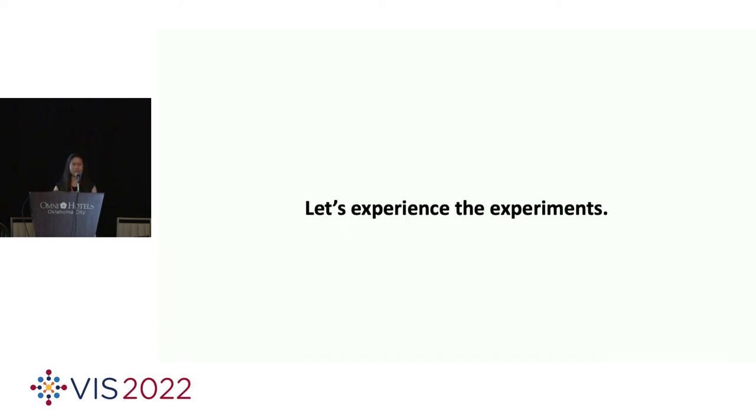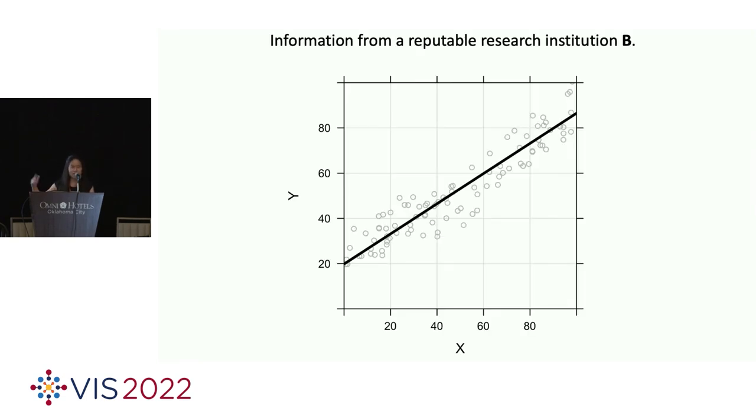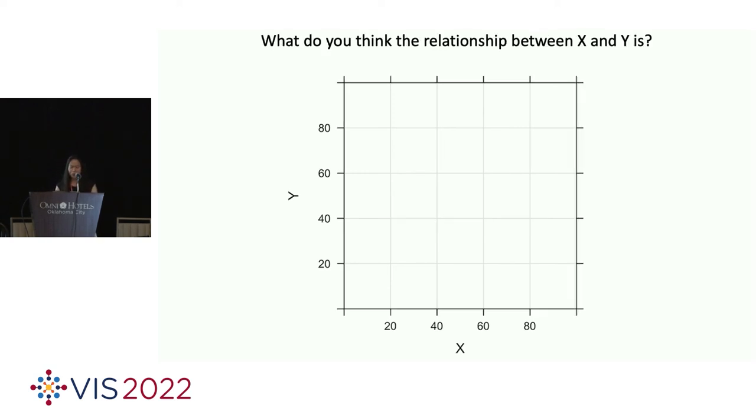So, let's experience what it's like to be a participant in our experiments. Let's say you're interested in the relationship between some variable X and Y. And after an online search, you find a reputable research institute producing this chart, which shows a negative relationship between X and Y. So, just to be sure, you dug a little further. And to your surprise, you find this other chart from an equally reputable institution showing a positive relationship between X and Y. Now, what do you think the relationship between X and Y really looks like? Try drawing a mental line.